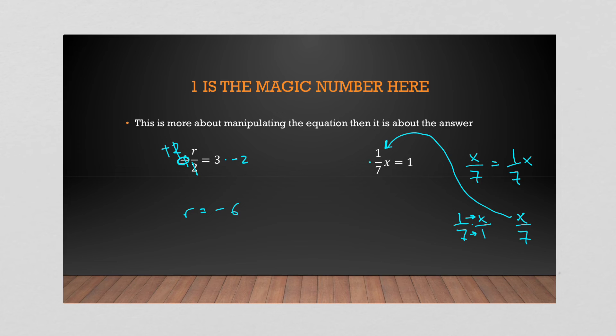So we approach this the same way, multiply by seven, because look, those are going to cancel and you're left literally with one X, which is what we want. Multiply by seven. So be aware of that notation. It's an important distinction.